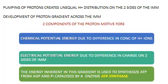The two sides are the matrix on one side and the intermembrane space on the other. This unequal distribution of hydrogen ions on the two sides of the inner mitochondrial membrane results in the development of a proton gradient across the inner mitochondrial membrane. This proton gradient is accompanied by a proton motive force.